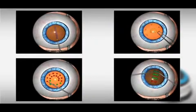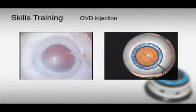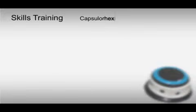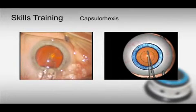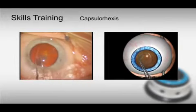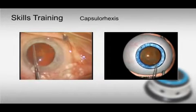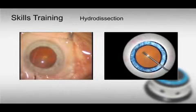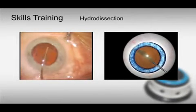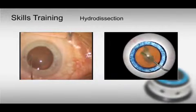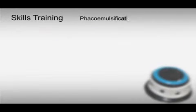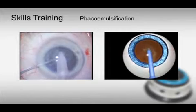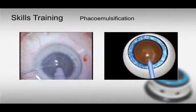Afterward, different steps of a cataract surgery can be performed. First, OVD injection. Capsulorhexis — please compare the real situation versus the virtual simulation. Hydrodissection including rotation of the nucleus. Finally, phacoemulsification including the divide and conquer technique, and quadrant removal.